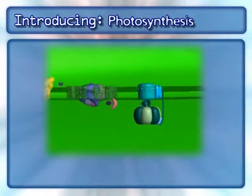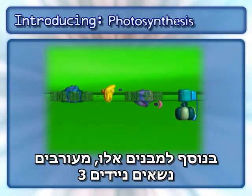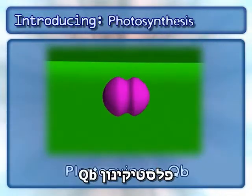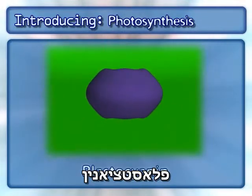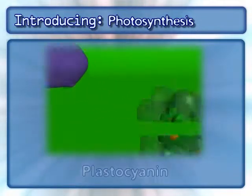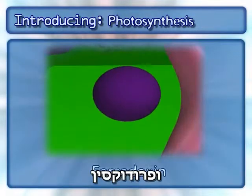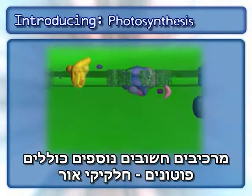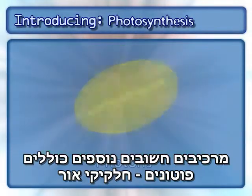In addition to the complexes, three mobile carriers are also involved: Plastoquinone QB, plastocyanin, and ferredoxin.